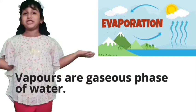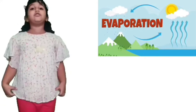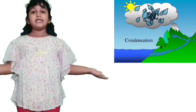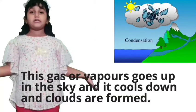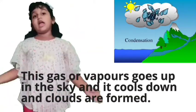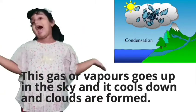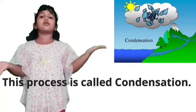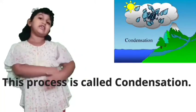Vapors are the gaseous phase of water. I told you this in my last video. This gas or vapors go up in the sky, and it cools down and clouds are formed. This process is called condensation.